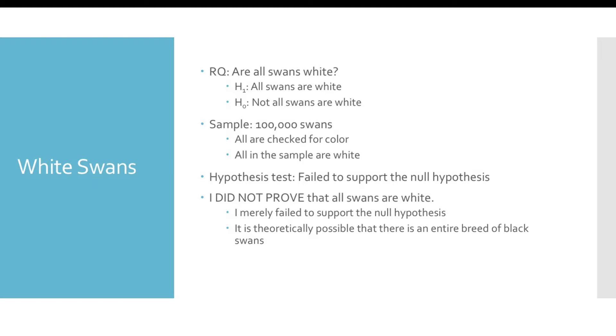But that does not mean that I have proven that all swans are white. I have merely been unable to reject the null hypothesis, which in turn supported my hypothesis. It is still theoretically possible that there is a black swan out there somewhere, like an entire breed in Australia, that just didn't make its way into my sample. Just because I have failed to support the null hypothesis does not mean that I have proven the hypothesis. I have only supported it.